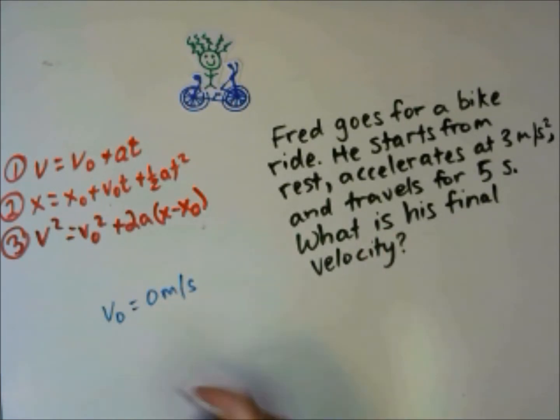V0 is 0 meters per second. He accelerates at 3 meters per second squared. A is 3 meters per second squared. He travels for 5 seconds. T is 5 seconds. What is his final velocity? We want to know v.